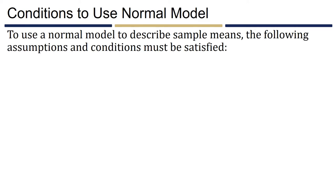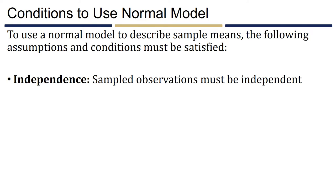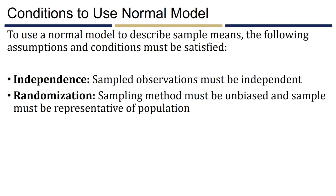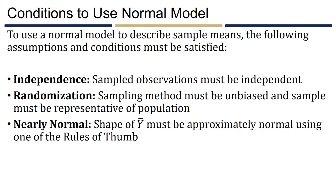To use a normal model to describe sample means, three assumptions and conditions must be satisfied. First, the independence condition: sample observations must be independent of one another. Second, randomization: the method of obtaining data must be unbiased and the sample must be representative of the population. Third, the nearly normal condition: the shape of the sample mean must be approximately normal based on one of the three rules of the central limit theorem.